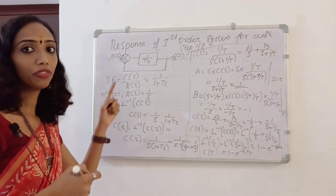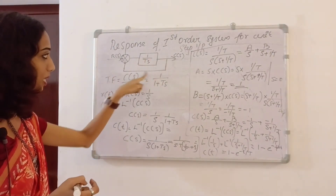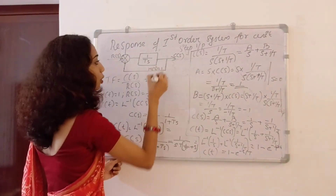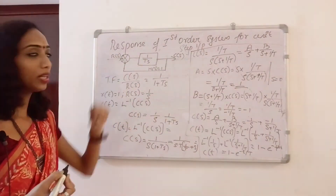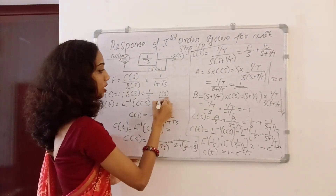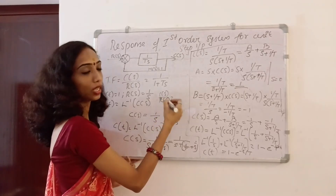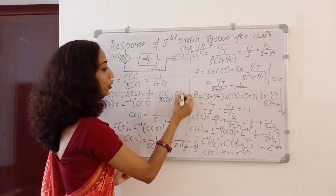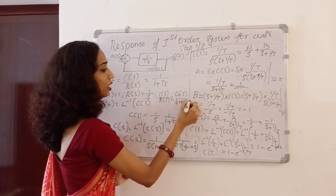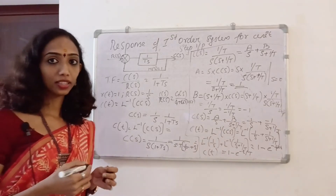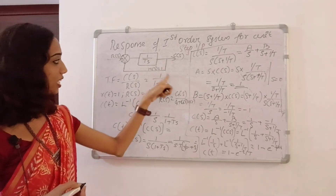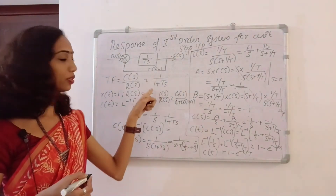G of S divided by (1 plus G of S · H of S). H of S is the feedback element. If H of S equals 1, then C of S by R of S equals G of S divided by (1 plus G of S). If G of S is 1 by (1 plus T·S), then C of S by R of S equals 1 by (1 plus T·S).